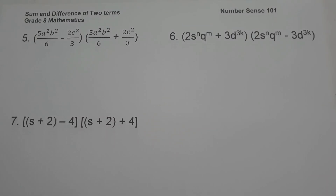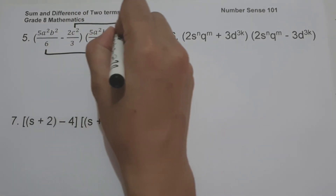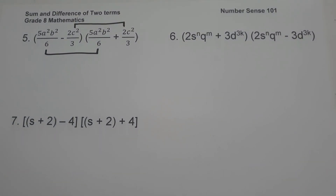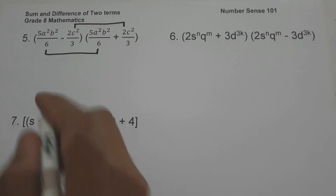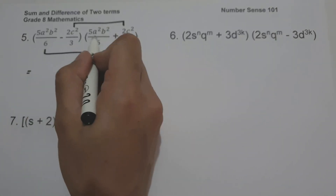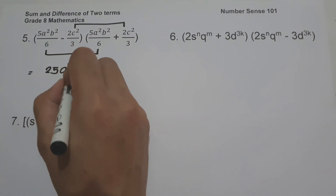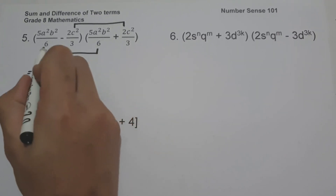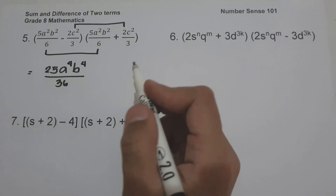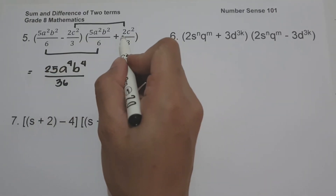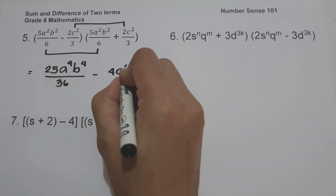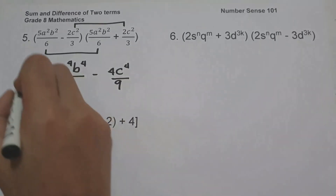On example number five we have quantity five a squared b squared over six minus two c squared over three, times the quantity five a squared b squared over six plus two c squared over three. When multiplying fractions, multiply numerator to numerator and denominator to denominator. Five a squared b squared times five a squared b squared gives twenty-five a to the fourth b to the fourth over thirty-six. Negative two c squared times positive two c squared gives negative four c to the fourth over nine. That is our answer.